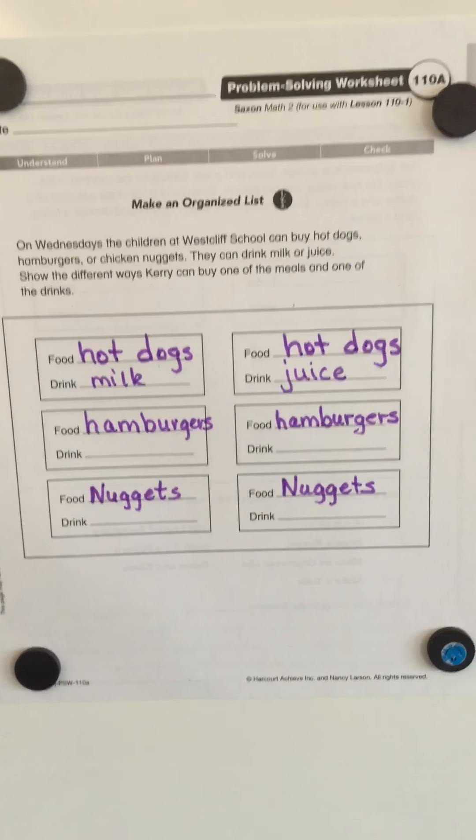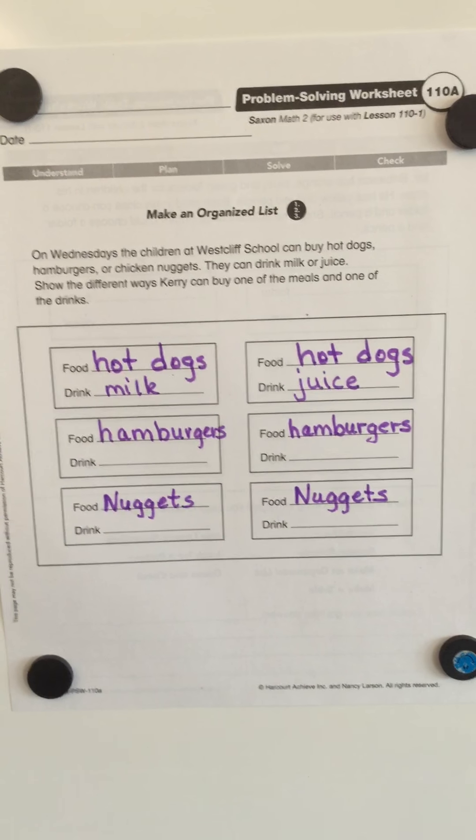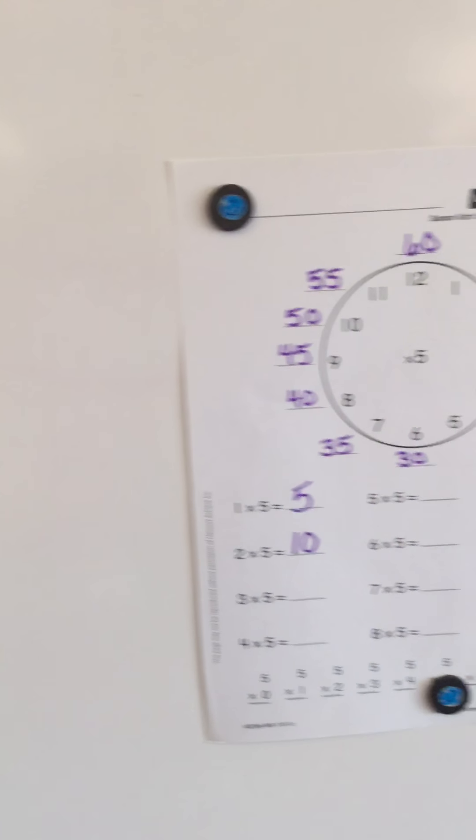Now, let's see. We know that the kids can make three different kinds of foods and two different kinds of drinks for their meals. So let's make a plan.